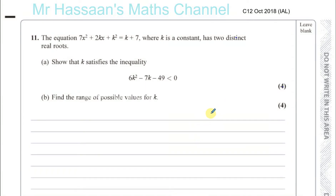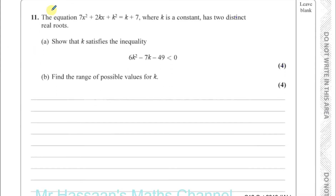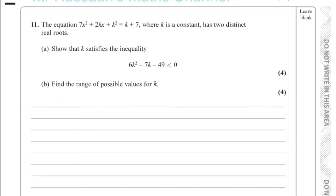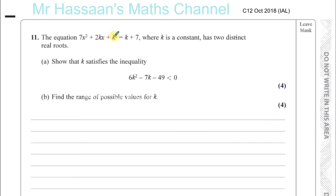Here we have question number 11 from C12 October 2018, which is also question number 6 in my practice paper C for the new P1 syllabus for international A level. The equation is 7x² + 2kx + k² = k + 7, where k is a constant and has two distinct real roots. We need to show that k satisfies a given inequality.